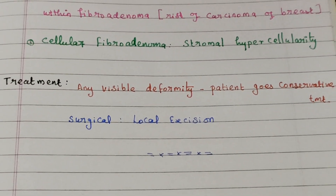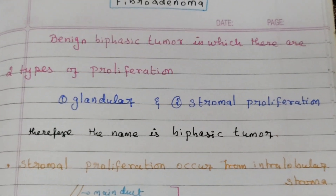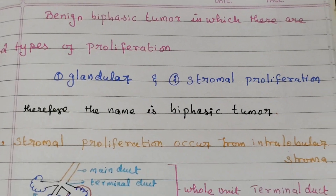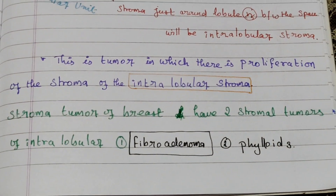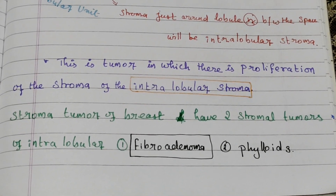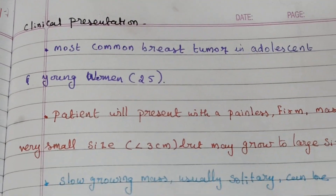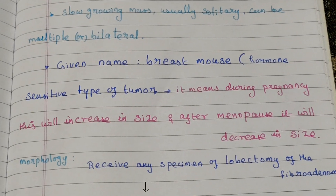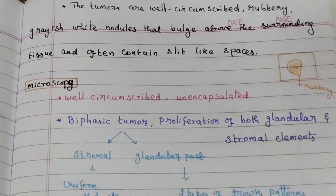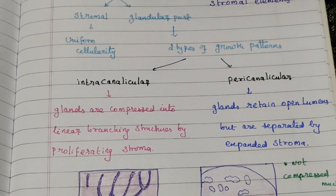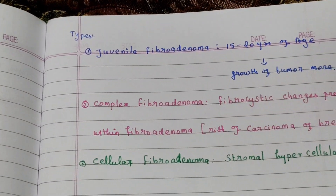So this is all about fibroadenoma — covering the definition, clinical presentation including the 'breast mouse' appearance, microscopic appearance with intracanalicular and pericanalicular patterns, types including juvenile, complex, and cellular fibroadenoma, and treatment options.